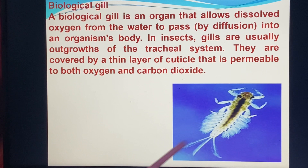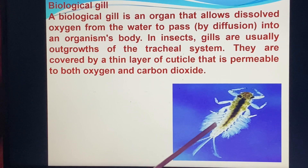A tracheal gill — as shown in this picture — is exemplified by the dragonfly nymph, which possesses tracheal gills that can be used to absorb oxygen.